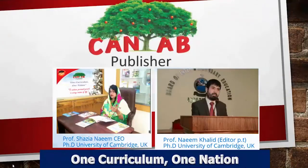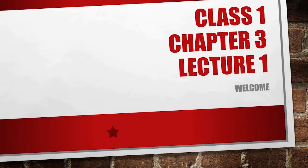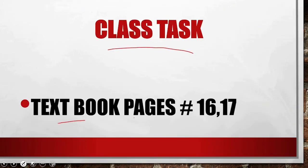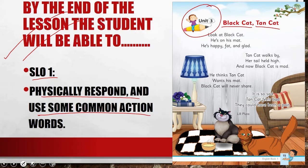Bismillahirrahmanirrahim. Welcome to the video session of Kentab Publisher. For today's lesson you need the textbook English 1, Class 1, Chapter 3, Lecture 1. For the class task, kindly open your textbook pages 16 and 17. It's a new unit: Black Cat, Tan Cat. By the end of the lesson, the student will be able to physically respond to some common action words.